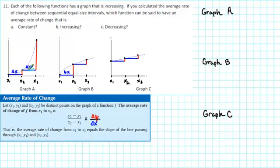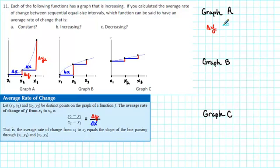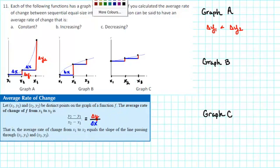Now we can see that the change in y is different, so we'll go ahead and label each of those. Here we have delta y — to indicate that it's different, I'll call the first one delta y1 and the second one delta y2. Let's focus on Graph A for the moment. Notice that delta y1 is a lot smaller than delta y2. So under Graph A, I'm going to write: delta y1 is less than delta y2. Now we want to compare not the changes in y, but the average rate of change, so we need to divide by delta x.